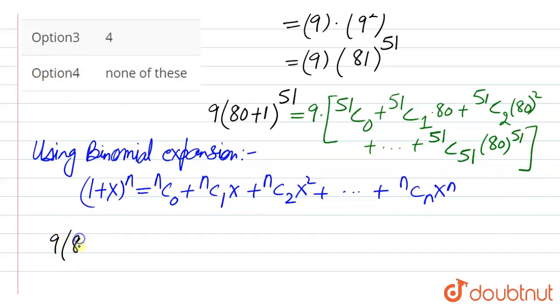So 9 into 80 plus 1 to the power 51 can be written as 9 times of: 51C0 is 1, this is 1; 51C1 is 51 into we have 80. Now all the other terms have 80 squared.